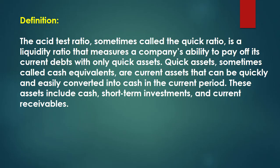The acid-test ratio, sometimes called the quick ratio, is a liquidity ratio that measures a company's ability to pay off its current debts with only quick assets. Quick assets, sometimes called cash equivalents, are current assets that can be quickly and easily converted into cash in the current period. These assets include cash, short-term investments, and current receivables.